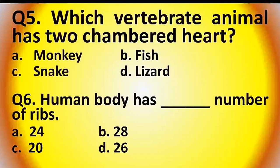Question 5: Which vertebrate animal has a two-chambered heart? Options are: monkey, fish, snake, or lizard. The answer is option B: fish.